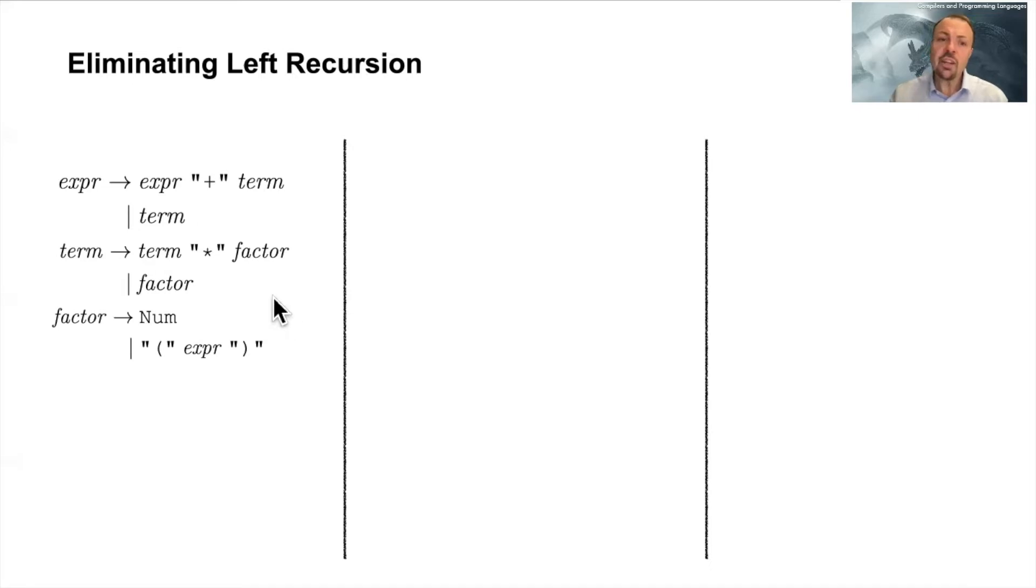Right, so we want to get rid of this left recursion. Why do we want that? Well, if you're using a parser generator tool that is using a bottom-up like an LR style parsing algorithm using Lex or Yacc or something similar, then it's not a problem. But if you're writing your own top-down recursive descent parser, then it's actually needed.